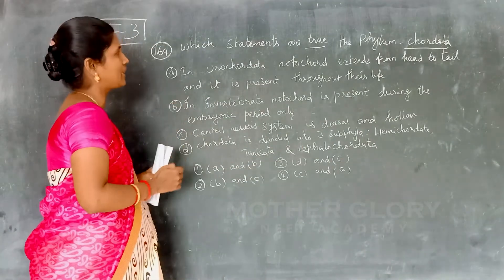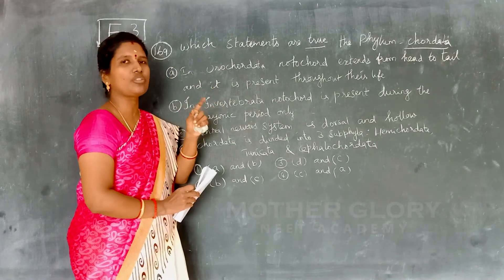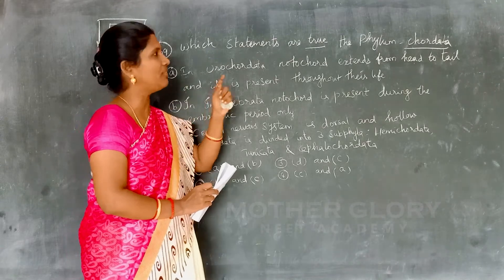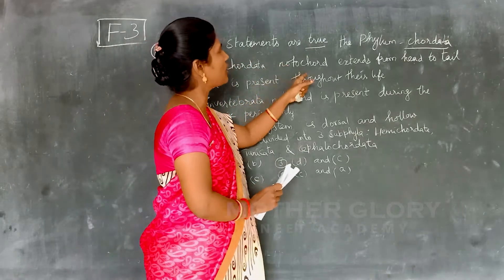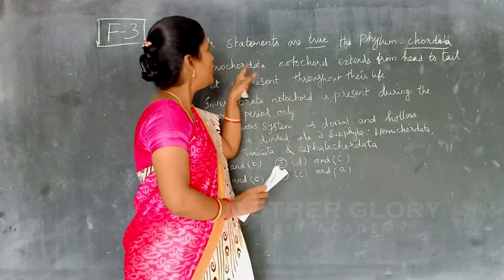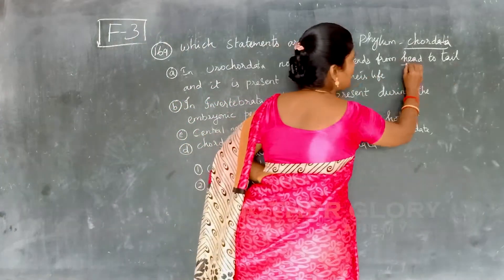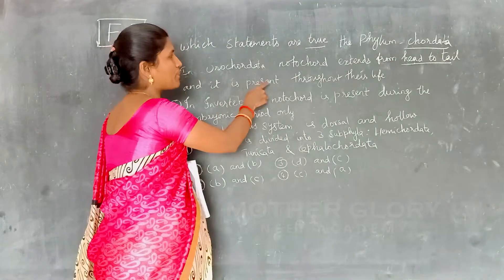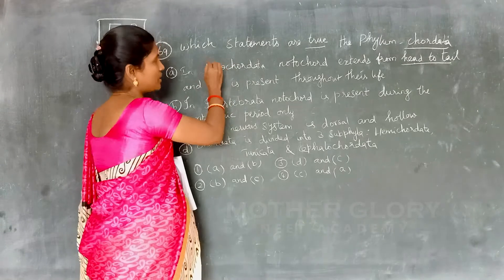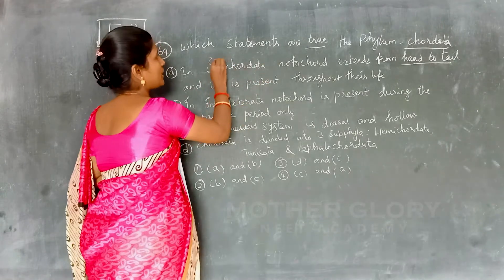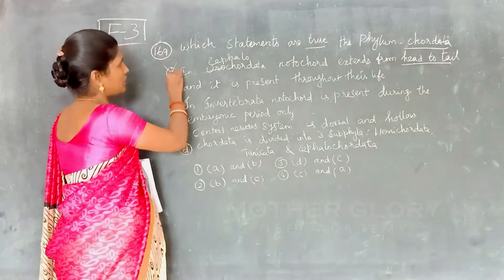The first option is Urochordata. Urochordata means the notochord extends from head to tail — the notochord is present throughout their lives. So this is the wrong option.